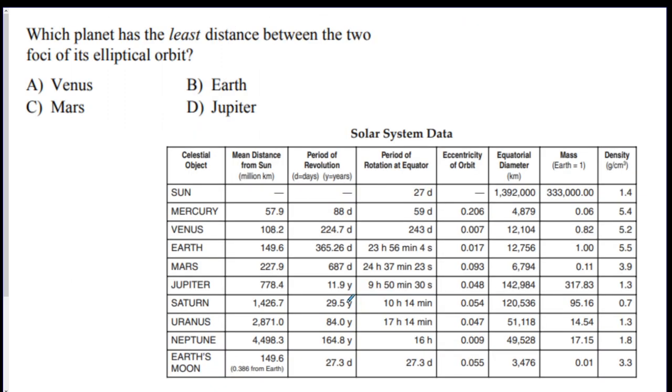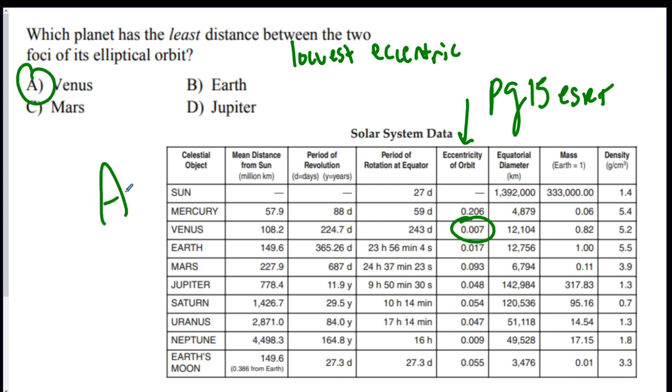Next one. Which planet has the least distance between the two foci of the elliptical orbit? So for this question, the least distance, remember we want the lowest eccentricity. We want the one that's closest to a circle. So if you look at eccentricity of orbit, this is page 15 on your reference table. You want the lowest one, which is Venus. Now if they asked for which one would be the most distance between the foci, you would look for the most, which would, I think in this case, be Mars. So you gotta just pay attention to what it's asking.